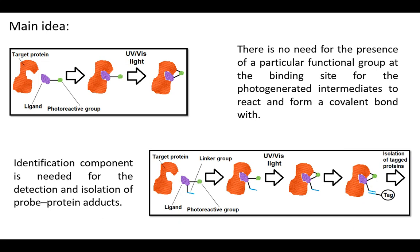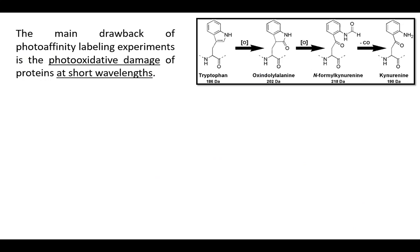The main drawback of photoaffinity labeling experiments is the photooxidative damage of proteins at short wavelengths due to the direct reaction of excited chromophores in the protein such as tryptophan with oxygen, or because of the generation of oxygen radicals by the photolabeling agent in a sample.